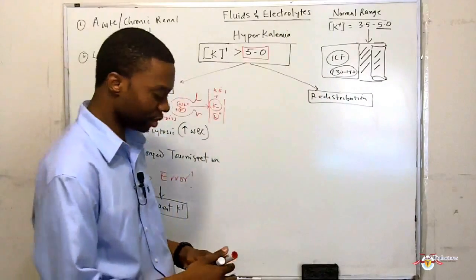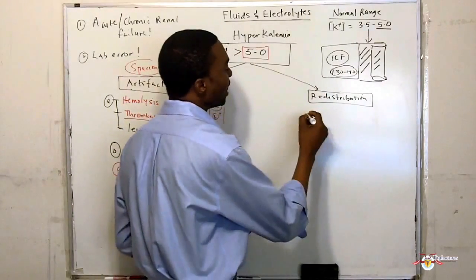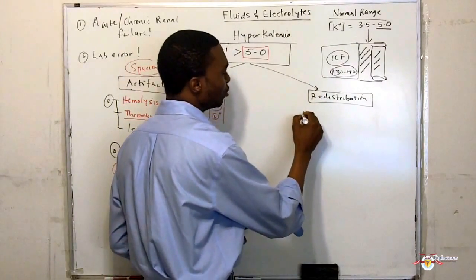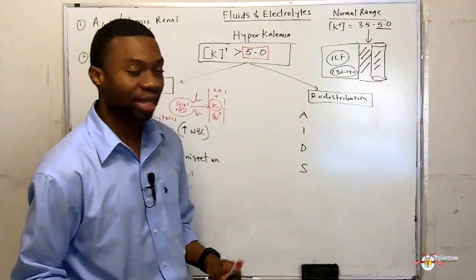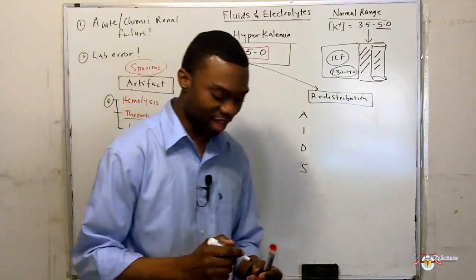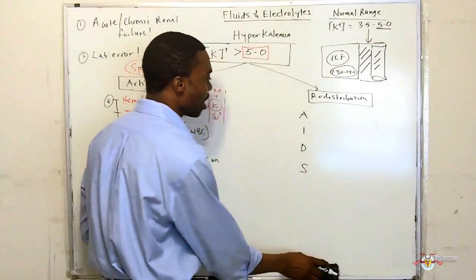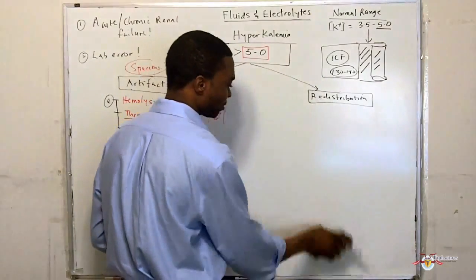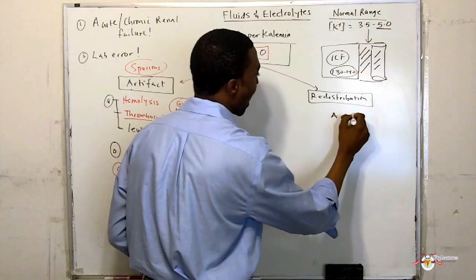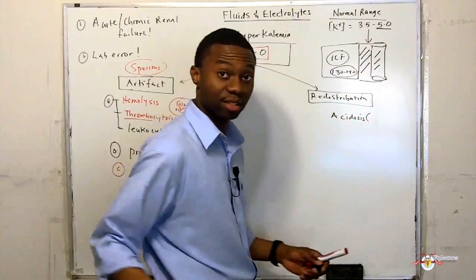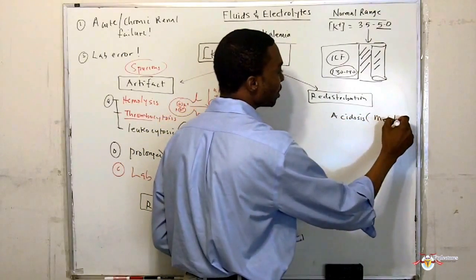Now let's talk about redistribution. The mnemonic for redistribution is AIDS. A is for acidosis — specifically metabolic acidosis.